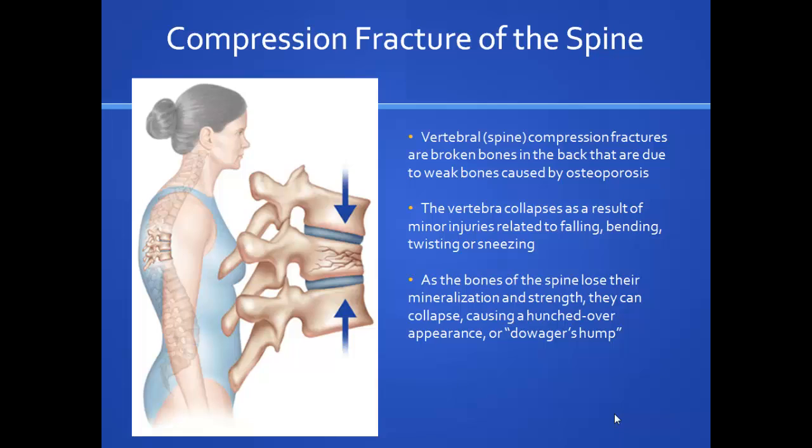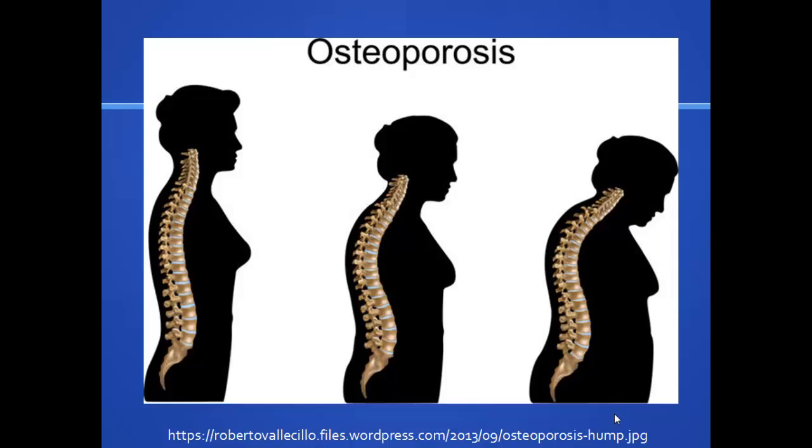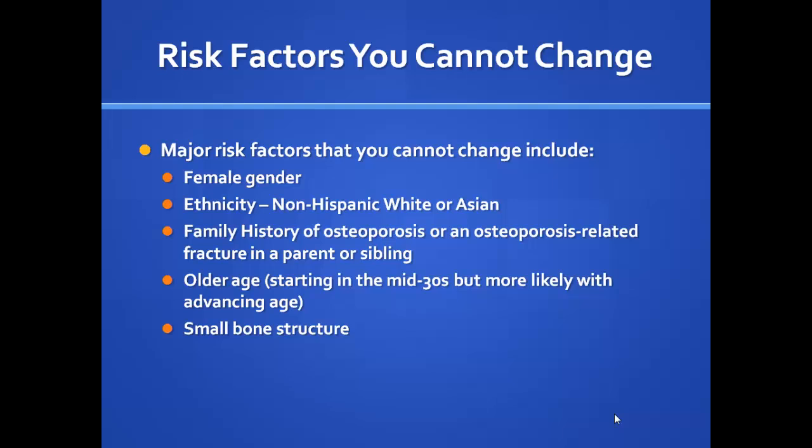As bones and vertebrae get weaker and start to collapse, we see the dowager's hump — illustrated at ages 30, 60, and 80. Among the risk factors for osteoporosis, some cannot be changed: gender, age, ethnicity, family history, and small bone structure. Petite Caucasian women tend to have less bone density and more osteoporosis as a result.